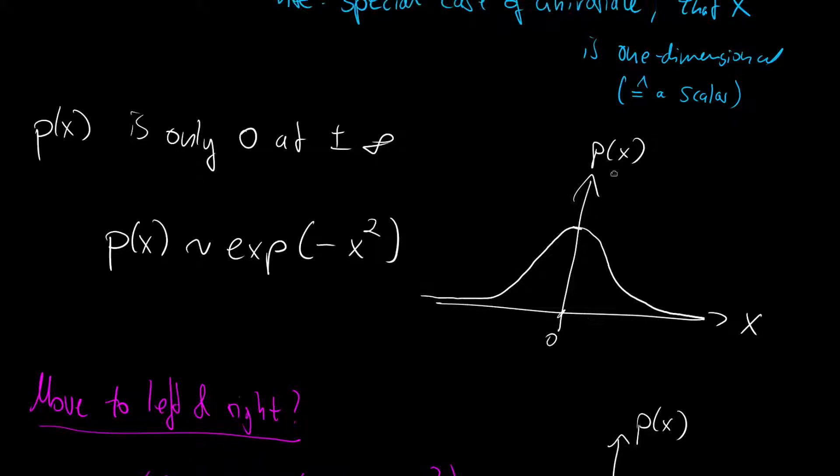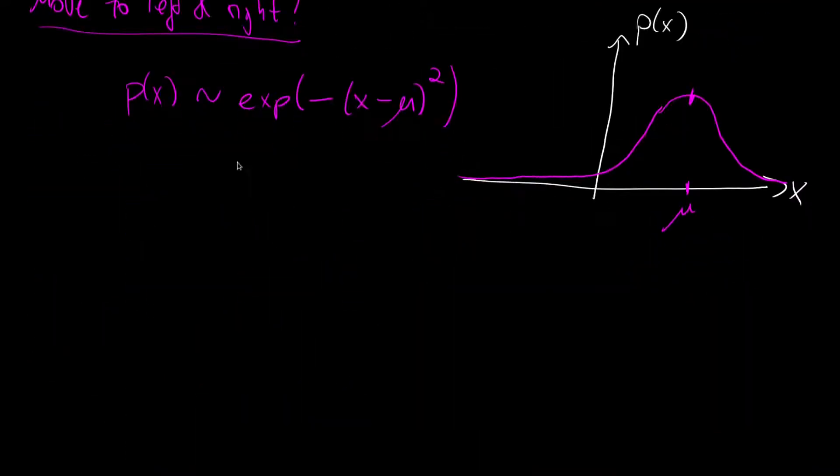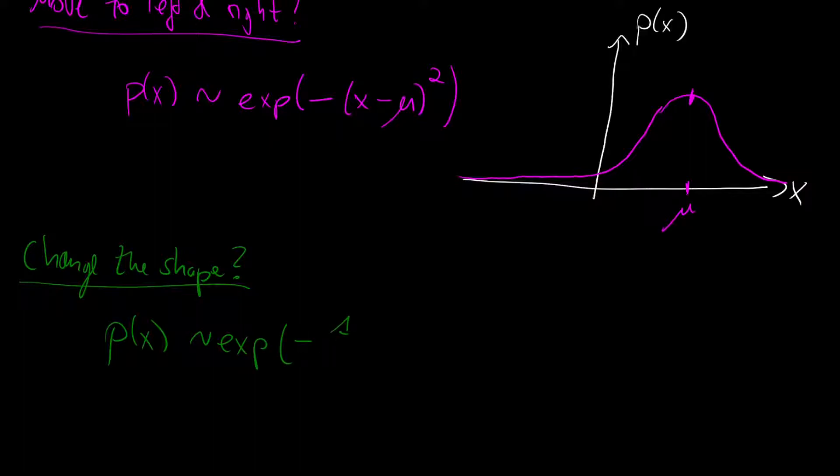But I mean right now it's not 100% visible but the shape of the distribution of the grades is also a little different. So it might be a little more narrow or it might be a little wider. And how can we model this? And let's call this change the shape. And for this we introduce another parameter.